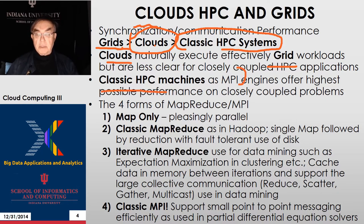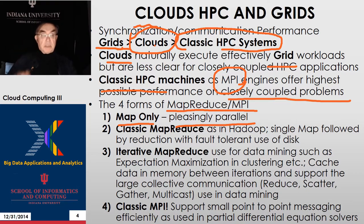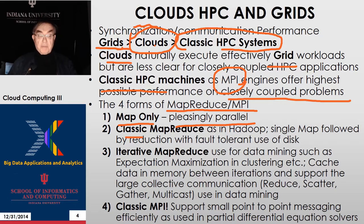You typically use MPI on HPC machines, which offers the highest possible performance on closely coupled problems. We now have four forms of MapReduce. There is map-only, which is pleasingly parallel — you just run maps, essentially compute jobs which may read from disk but don't communicate. Then there is classic MapReduce, supported by the simplest versions of Hadoop — maps followed by reductions, with everything written to disk, providing fault tolerance.